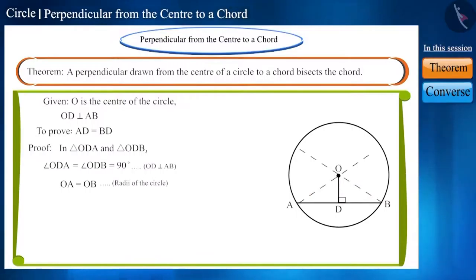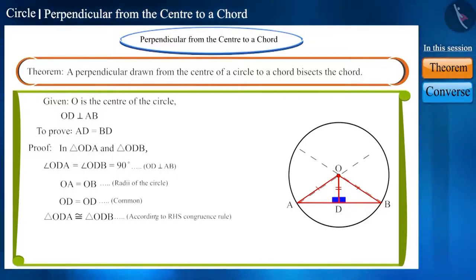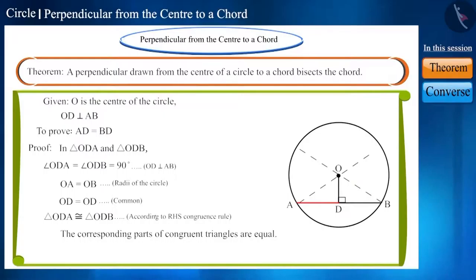Friends, you can see that OD is the common side. Therefore, these two triangles are congruent according to the right angle hypotenuse side, or RHS congruence rule. We know that corresponding parts of congruent triangles are equal. Therefore, the corresponding sides of these triangles, side DA and side DB will be equal. That means AD is equal to BD.